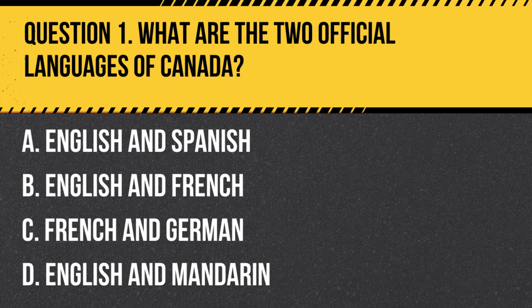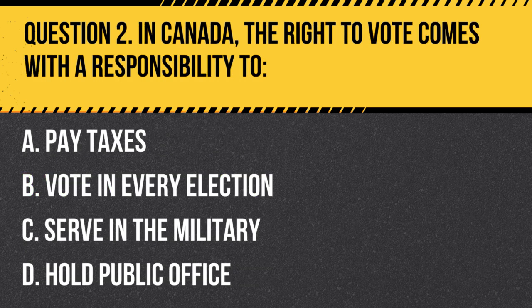Answer: B. English and French. Canada is officially bilingual at the federal level, which means that English and French have equal status in government and official documents.